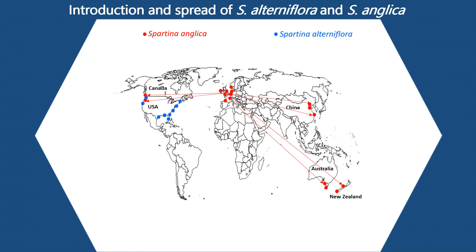Similarly, Spartina alterniflora from its native region was introduced into several countries for land reclamation. However, after their spread, the species became invasive and quickly spread into areas of conservation value, covering large areas of mudflat and affecting biodiversity. Consequently, local management policies have been designed for total eradication or minimization of the spread of these invasive species.